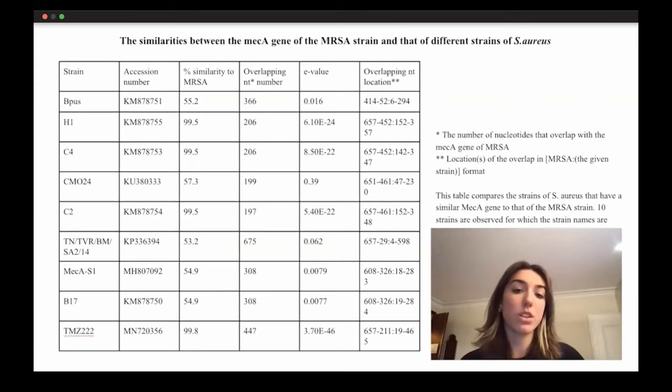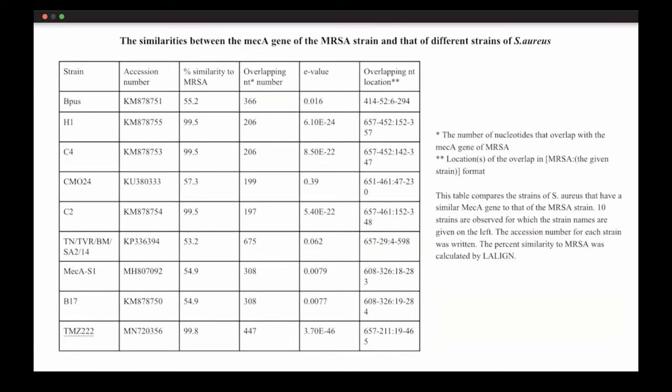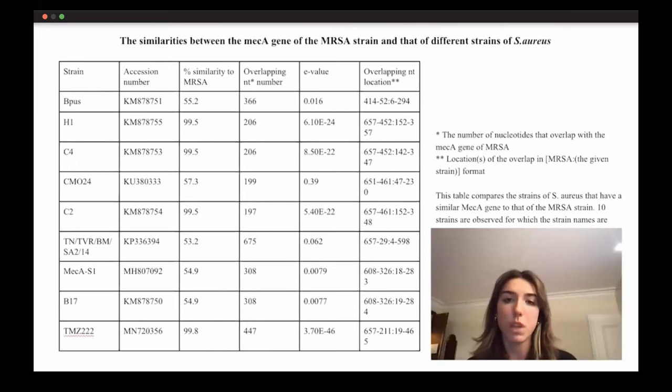To continue my study, I first studied different strains of MRSA, and I studied the mecA gene of different strains of MRSA and compared them to each other. So I had these BPOS, H1, C4, CMO24, C2, TNT-VR, RBM, SA2, mecA, SA1, S1, B17, and TMZ222 strains. They're all different strains of MRSA, and they all have the mecA gene. And I compared them to each other, and as you can see from the e-values, they had very similar mecA genes, and they barely had any differences, and they had a lot of overlapping locations.